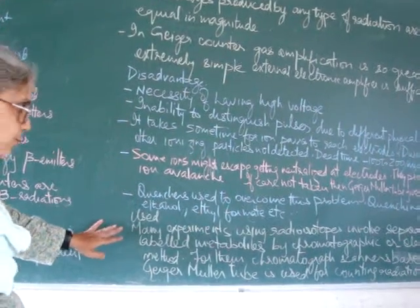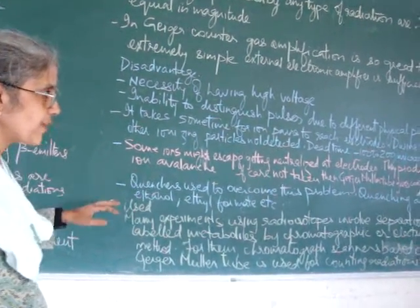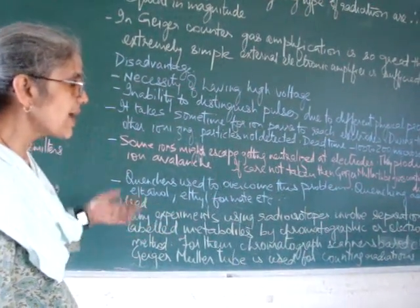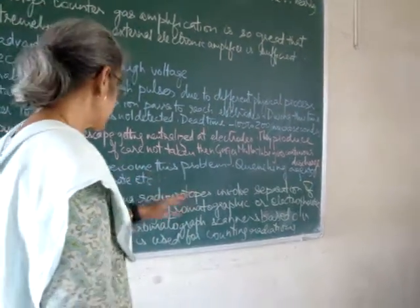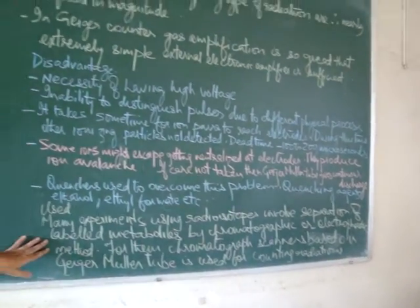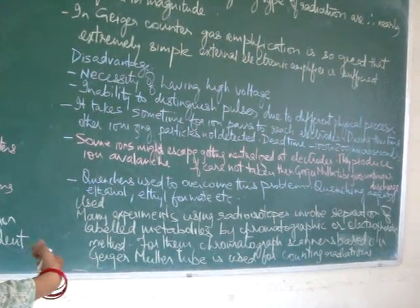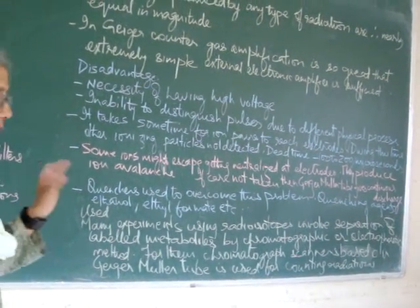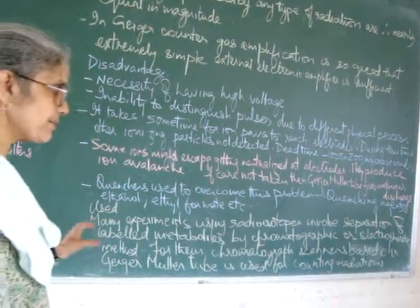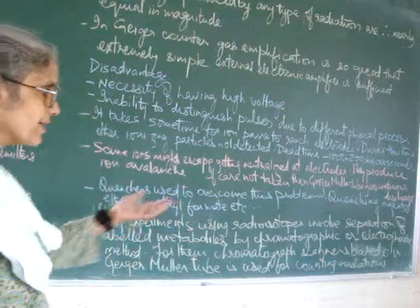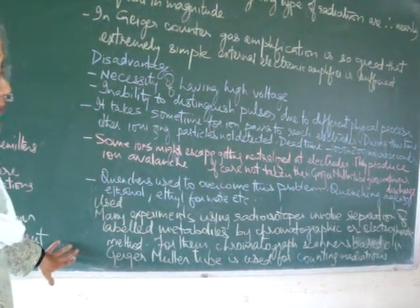The Geiger-Muller tubes are used for many experiments in which radioisotopes are used. These radioisotopes after experimentation are separated by chromatographic or electrophoretic methods and then chromatographic scanners are used to detect these labeled metabolites based on Geiger-Muller tubes.